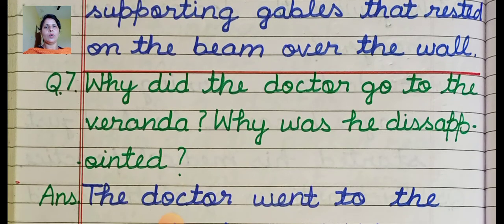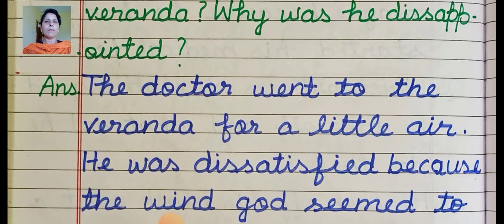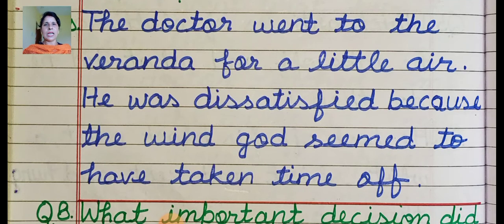Why did the doctor go to the veranda? Why was he disappointed? Doctor went to the veranda for a little air — thodi hawa paane ke liye. But he was disappointed because the wind god seemed to have taken time off — laga ki wind god ne chutti le li — hawa chal nahi rahi thi.